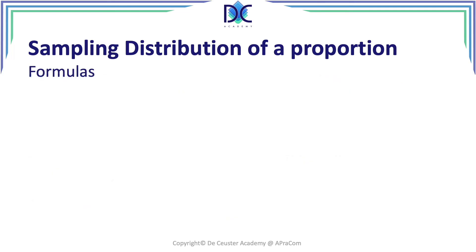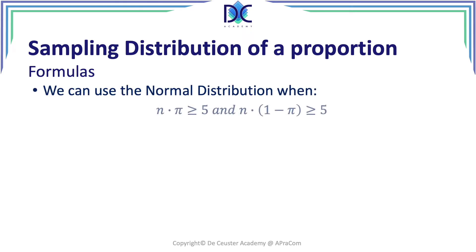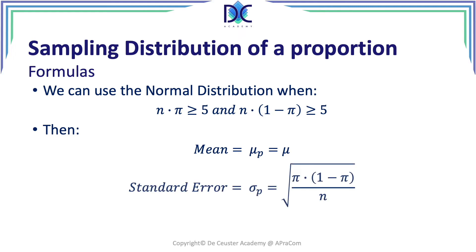Let's have a look at the formulas. First of all, we can use the normal distribution when the product of n times pi is larger than or equal to 5, and the sample size multiplied by 1 minus pi is also larger than or equal to 5. We can say that the mean is equal to the proportion selected, which is equal to the average of all the set of proportions. We can find the standard error, sigma of the proportion — sigma small p — which is the square root of pi times 1 minus pi divided by n.